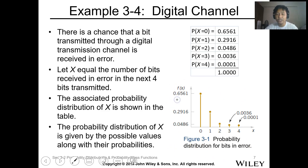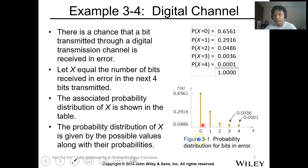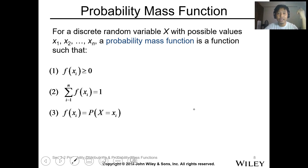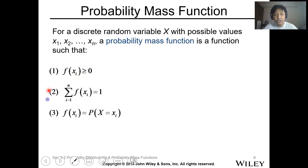As you can see in the graph, the probability at X = 0 is the highest at 0.6561, which is 0.9 raised to the fourth power. Now, for a discrete random variable X with possible values x1, x2, ..., xn, a probability mass function (PMF) is a function where f(xi) ≥ 0, the summation of all probability outcomes equals 1, and the probability outcome equals P(X = xi).